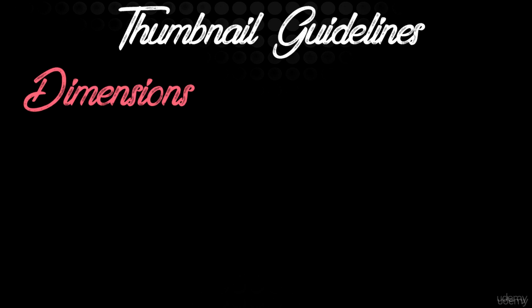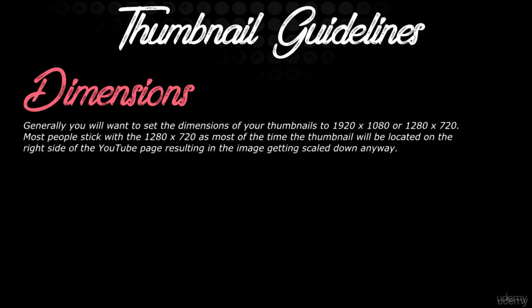Before we begin, there are some guidelines we're going to have to adhere to when we make our thumbnails. The first one being dimensions. We're going to want to make our YouTube thumbnail a specific dimension. Typically it's going to be 1920x1080 or 1280x720. Most people opt for 1280x720 solely because they can fit lower resolution images and make them actually look good, as opposed to 1920x1080. Once you move up to the higher resolutions, you're going to have to scale those images bigger and bigger and they will lose their quality.